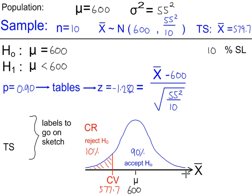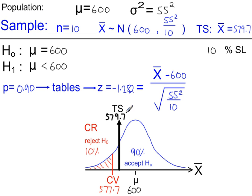On this number line, 579.7 will be here — that's our test statistic. The test value of 579.7 is in the acceptance region, so we're going to accept H0. There is no evidence for the alternative hypothesis, so we conclude that there is no significant evidence that the population mean lifetime has decreased.